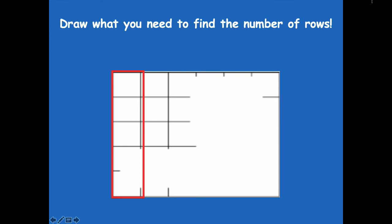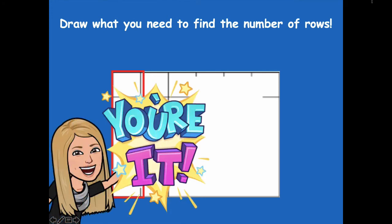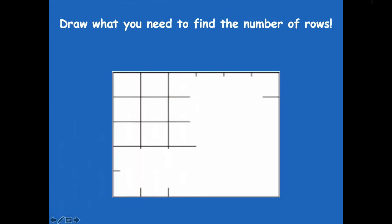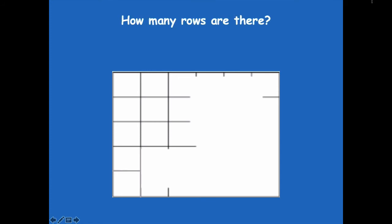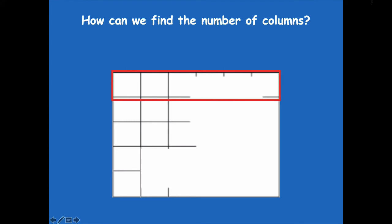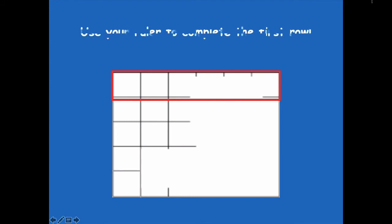Draw what you need to find the number of rows. Pause the video. Yes, all we have to do is draw in those two spots right there. Okay, how many rows are there now? Five. How can we find the number of columns? And we can just connect those lines, right?